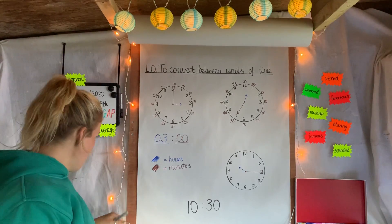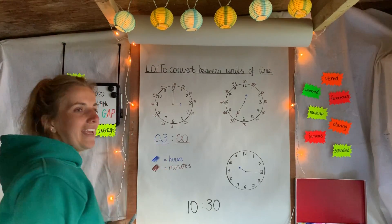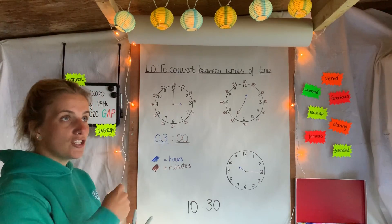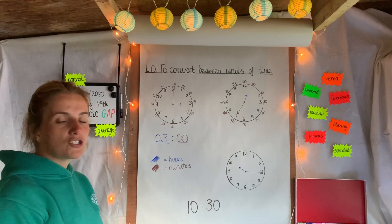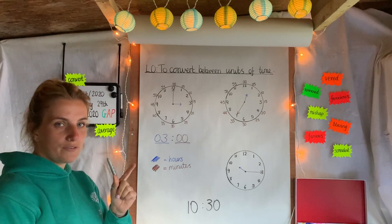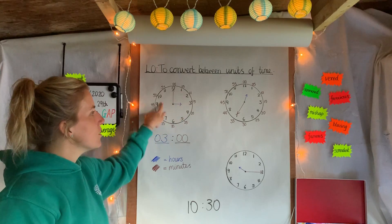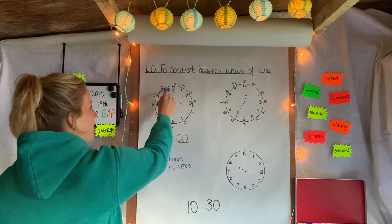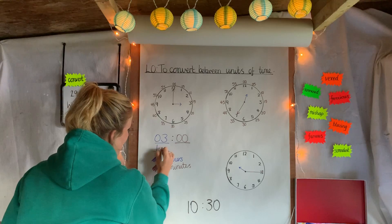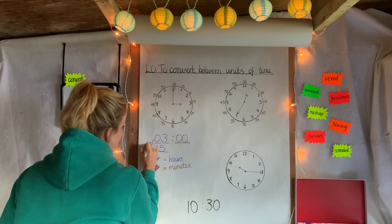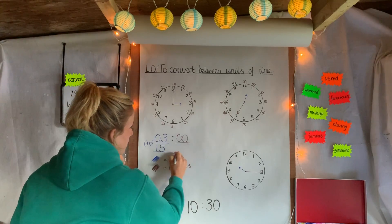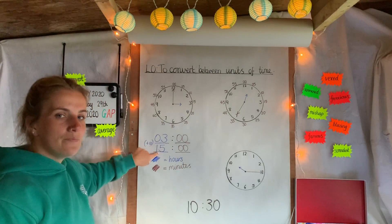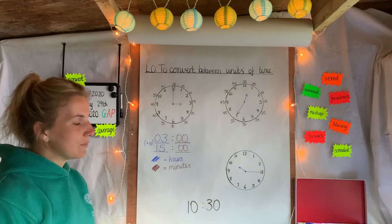This tells us it's in the morning — we know that because the number is less than 12. If it were three o'clock in the afternoon it would be 12 more hours, because there are 24 hours in a day — two lots of 12, going around twice. To convert to PM we add 12 hours, but the minutes stay exactly the same. This is 24-hour time.